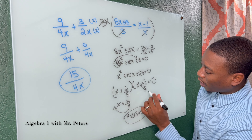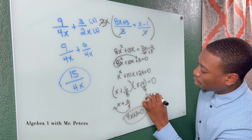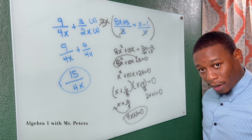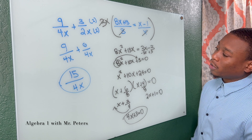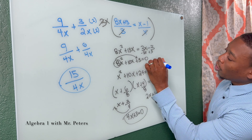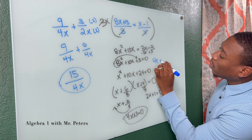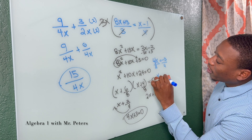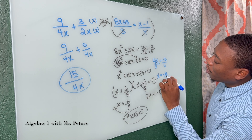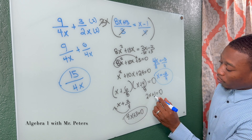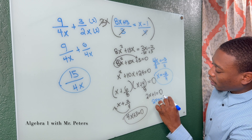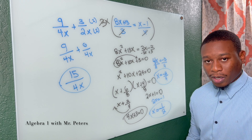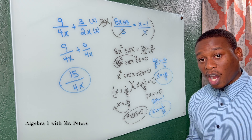Over here the other factor gives us 1 half, so we're going to have 2x plus 1 is equal to 0. Now when I set my factors equal to 0 and solve: 4x equals negative 3, so x equals negative 3 over 4. And for the second factor, 2x equals negative 1, so x equals negative 1 over 2. So now we have those two solutions using the common denominator method.